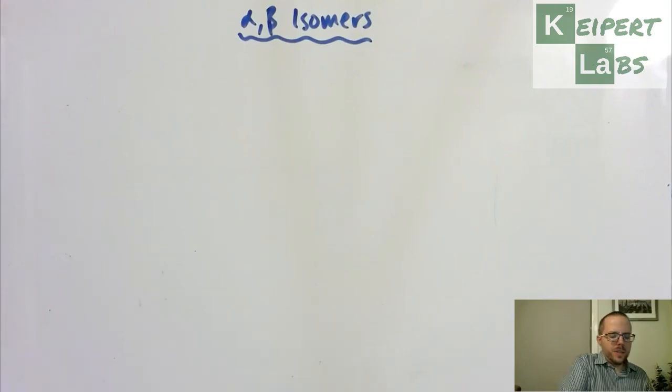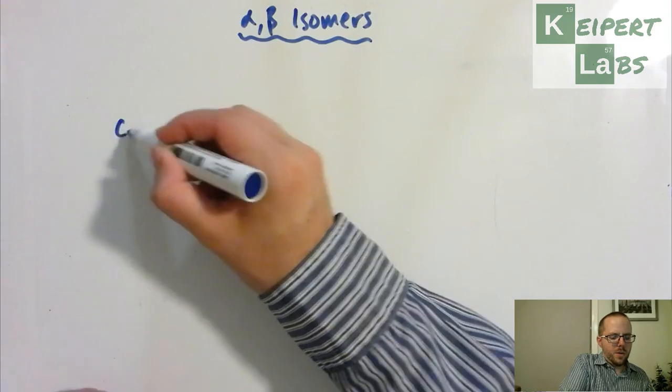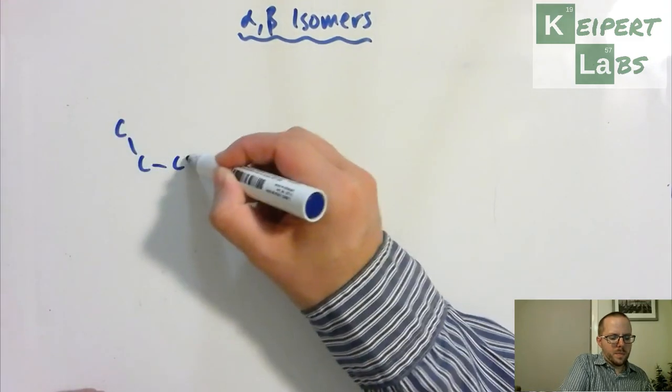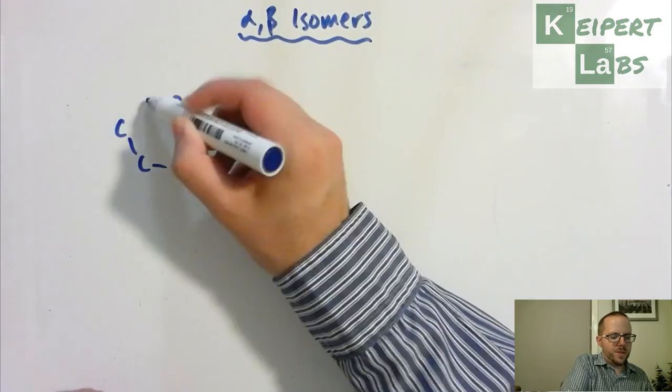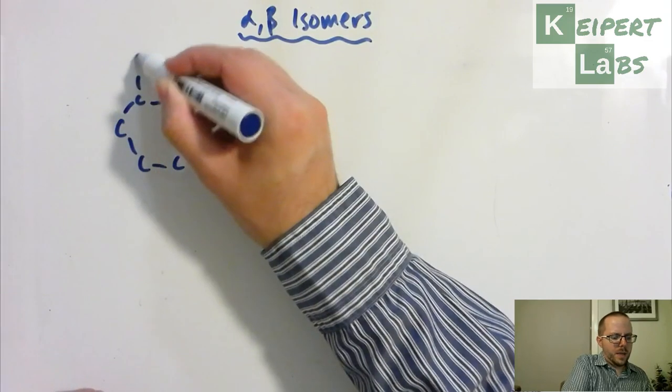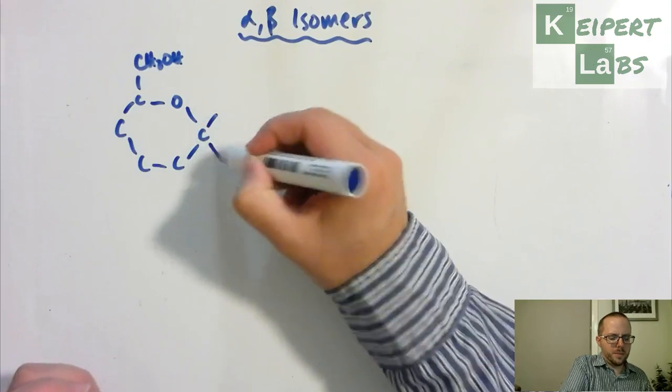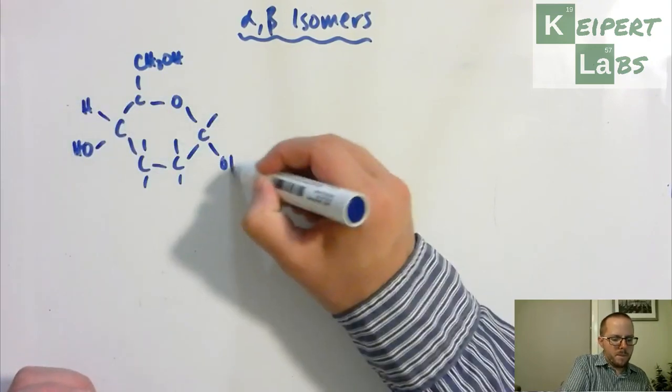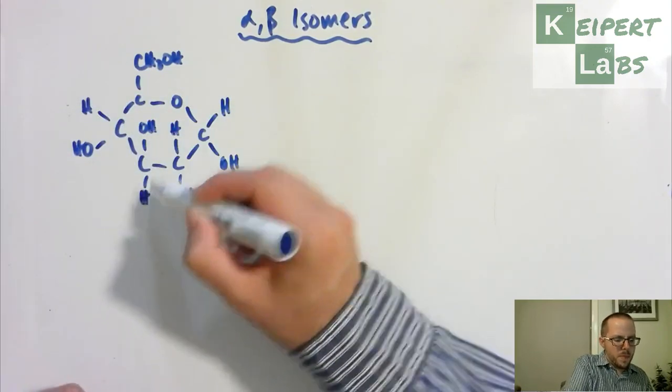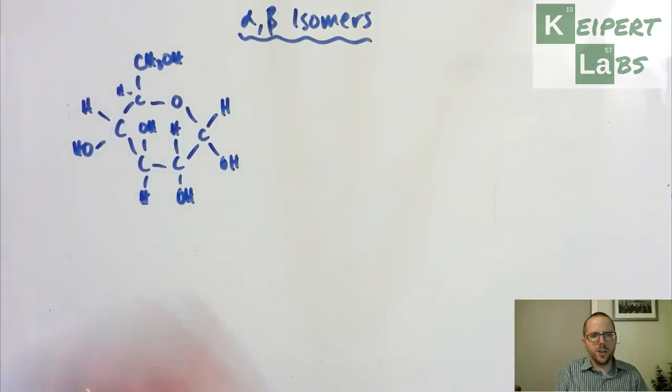So far we've looked at this idea of how glucose is put together. I've drawn this a few times. Hopefully you're getting a bit more familiar with how it is put together. So this is our structure of glucose.